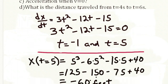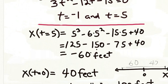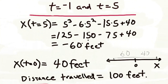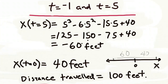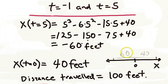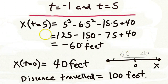The position at t equals zero is 40 feet, and at t equals five seconds it is minus 60 feet. So the particle started at 40 feet and moved to minus 60 feet at five seconds, meaning the distance traveled is 100 feet.